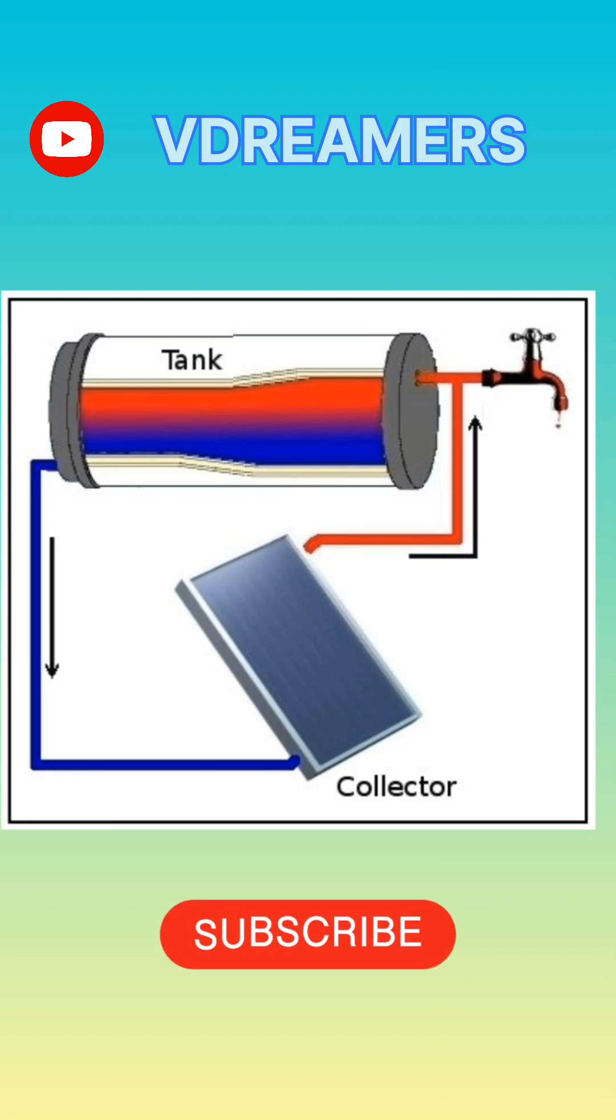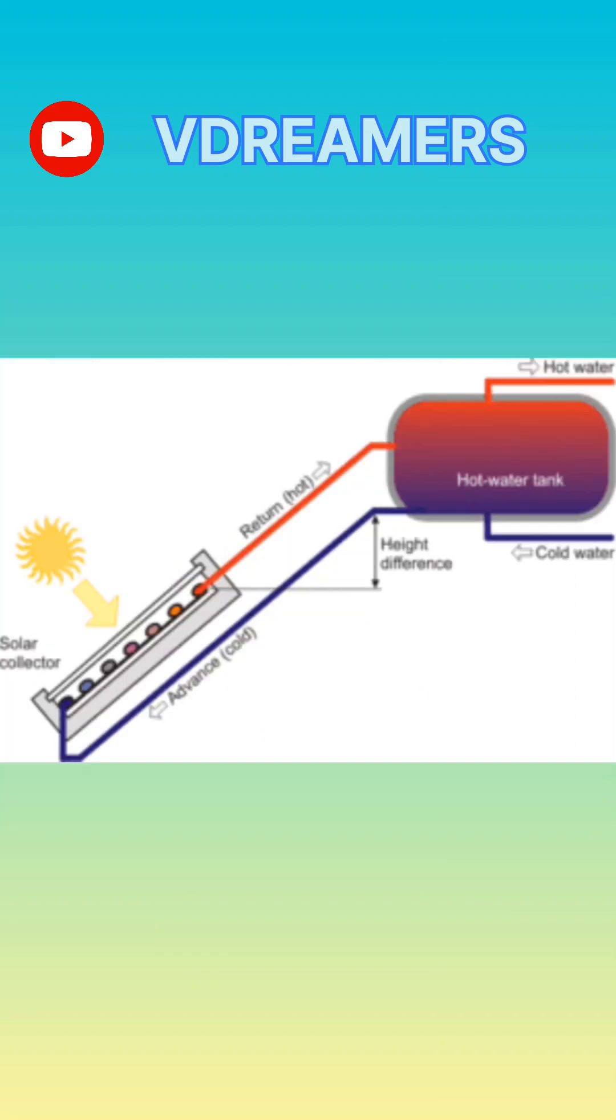Two, storage tank stores the heated water. Three, pipes connect the collector and tank to allow water circulation. Four, insulation keeps the heat in the tank from escaping. Five, control system to regulate water flow or temperature.